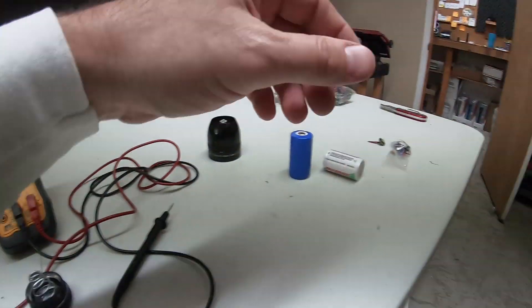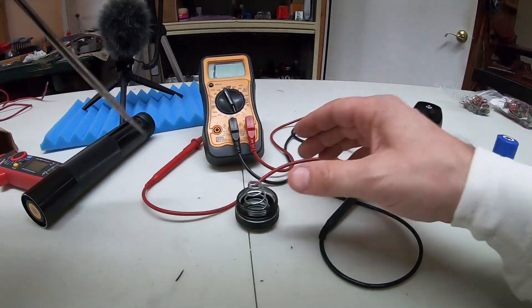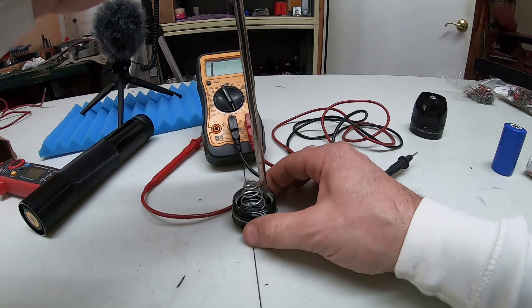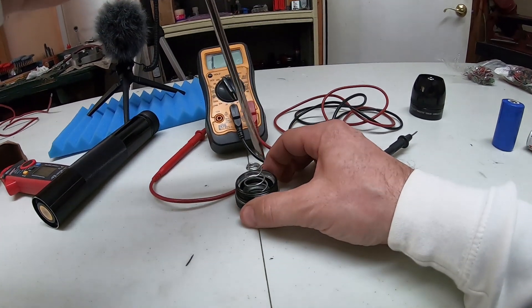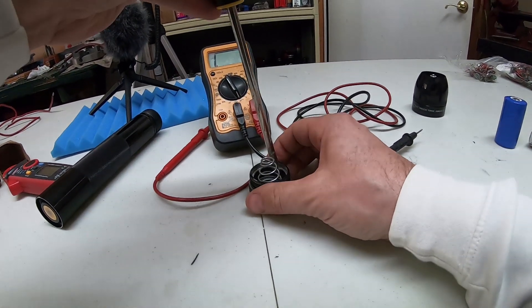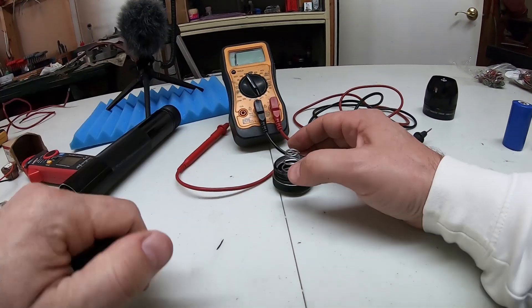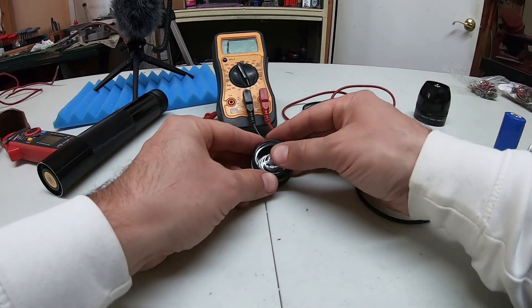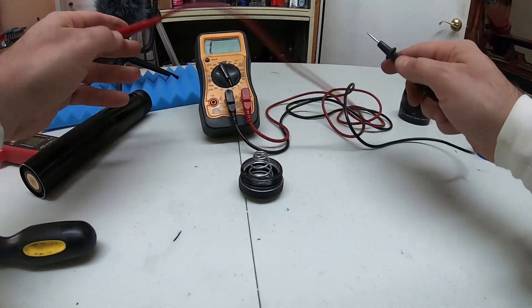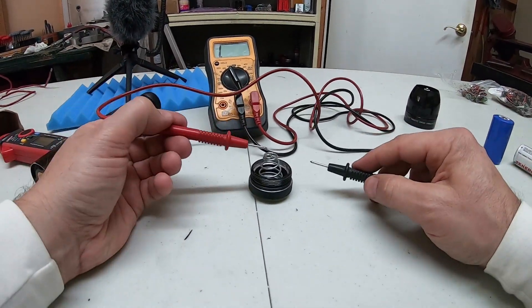But if we push this down good, sometimes even if they're pushed down and they look like everything's fine, what I do is just take a screwdriver around the edges, push that spring down good, make sure it's sitting flat even if it looked like it was good, just make sure. And then we'll try again.